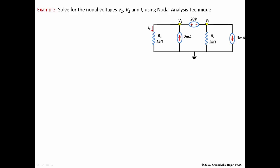The same problem applies at node V2. We know the current through R2 is defined by Ohm's law — V2 over R2 — and the 3 milliamps from the current source, but we don't know the current going through the voltage source. There is no direct relationship that describes how much current will leave or enter the voltage source.